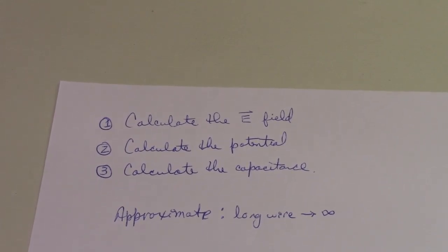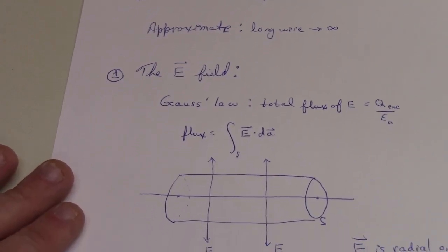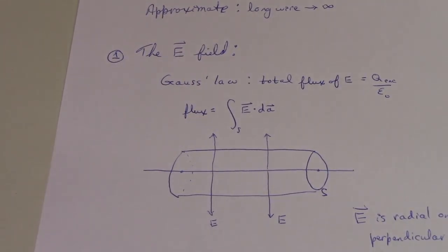One approximation we're going to make is we're going to assume that our wire is very long, or infinitely long, compared to the diameter of the wire. So first of all, how do you calculate the electric field of this piece of wire?